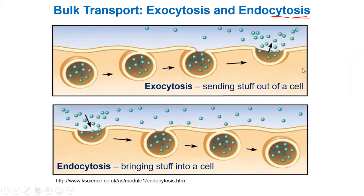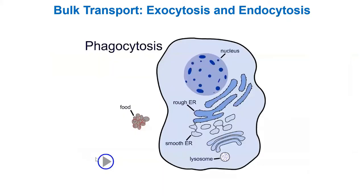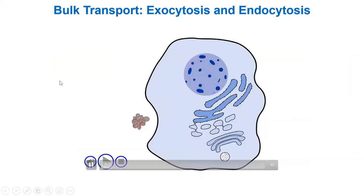Endocytosis is like eating. The membrane forms a little pocket or an invagination which eventually gets pinched off to make a little vesicle, or food vacuole. Let's take a closer look at these processes because there are different ways to do bulk transport.